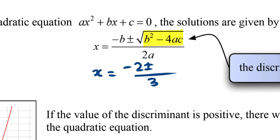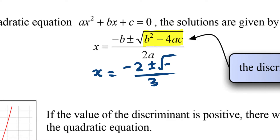Now what if that was zero? If that b squared minus 4ac bit was zero, the square root of zero is just zero, so we'd just get negative 2 thirds — only one solution to this quadratic equation. What about if we have a negative number for the discriminant, say negative 4? The square root of negative 4 is not something we can deal with in the AS Maths course — it's not a real number. So we say there are no real solutions for that quadratic equation.